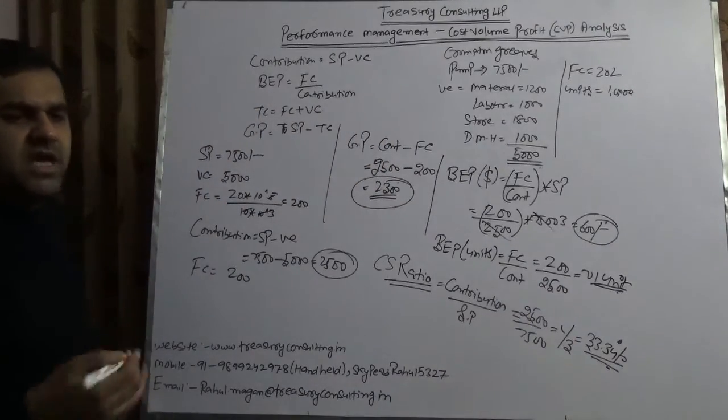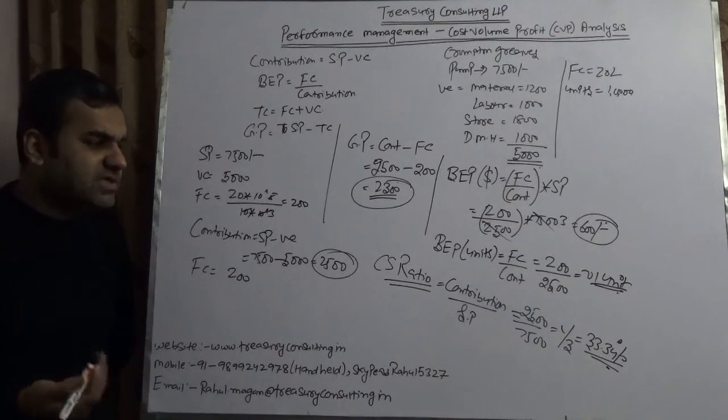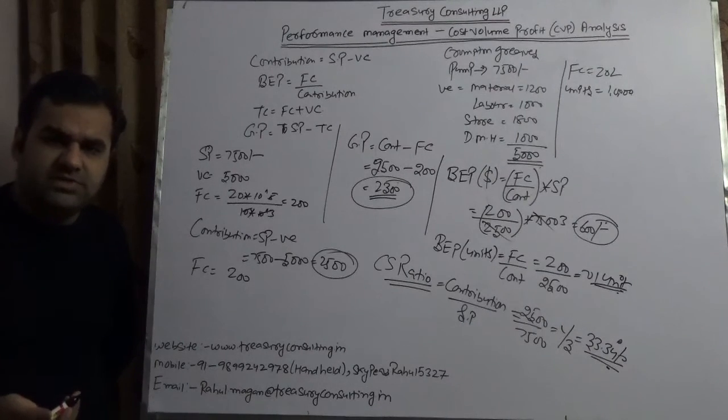This is absolute profit. It means every product which Crompton Greaves is selling at $7,500 gives them a contribution of one-third. One-third is direct profit which Crompton Greaves is getting.